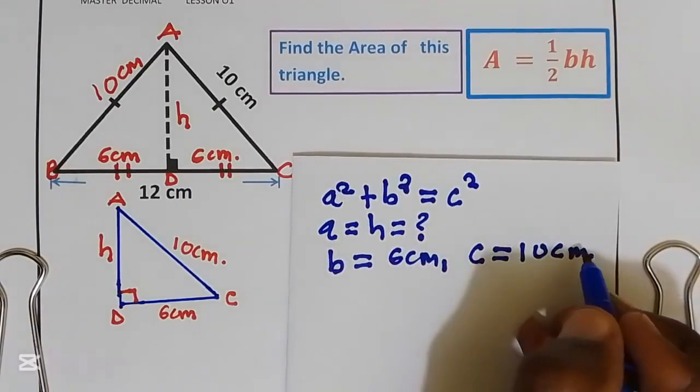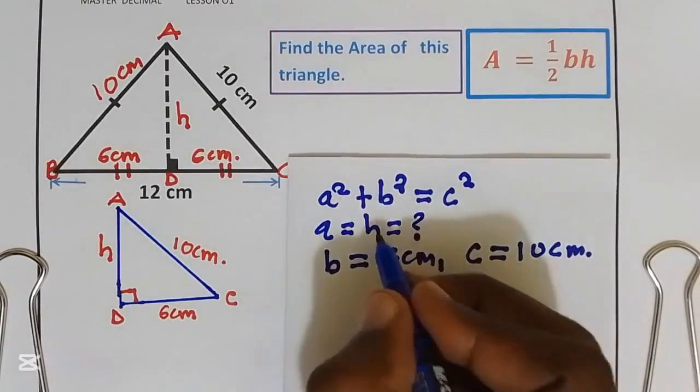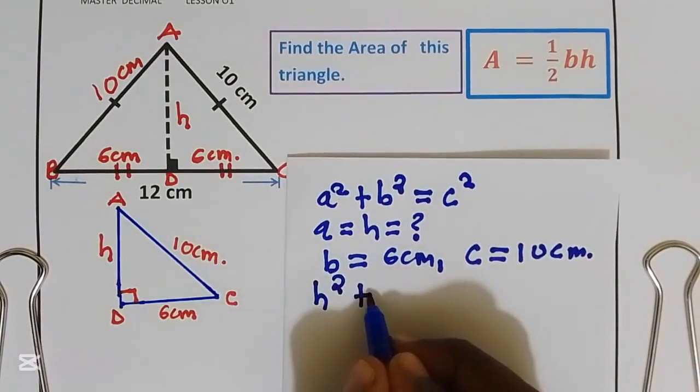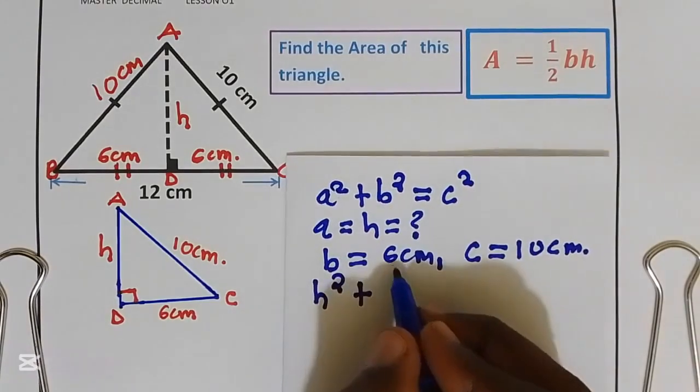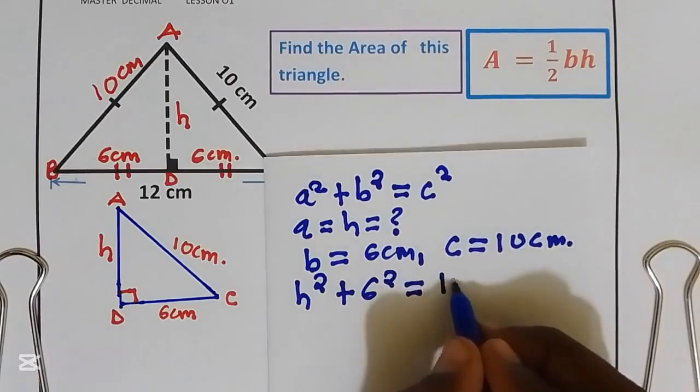Let us substitute this into Pythagorean theorem. a is equal to h, that is going to be h². Plus b is equal to 6, that is 6². This is equal to 10².